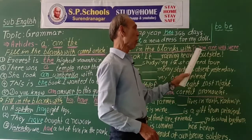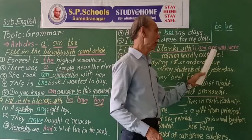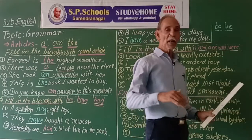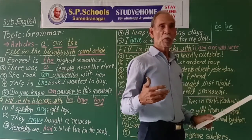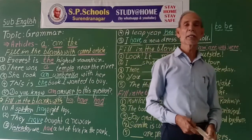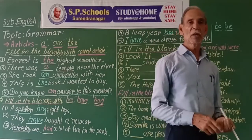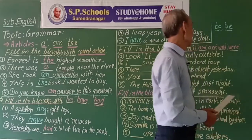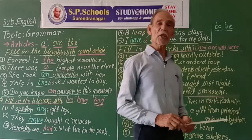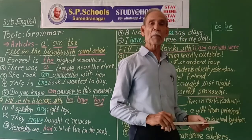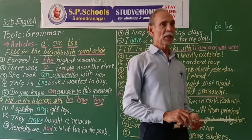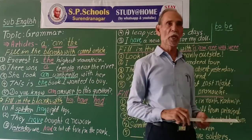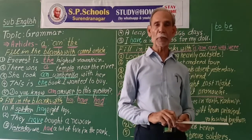The present first-person form is 'am'; past first-person form is 'was'. The imperative form is 'be' — as in 'be honest' — used for commands, suggestions, and instructions. The past participle is 'been' and the present participle is 'being'. There is no future form of any verb in English; we use 'shall' or 'will' to indicate future tense.